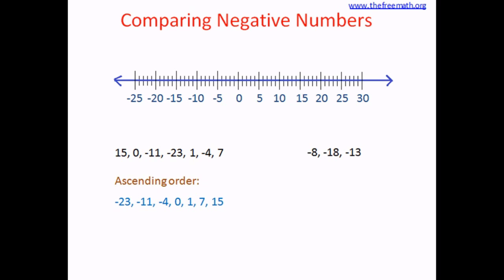The next set is negative 8, negative 18, and negative 13 — all negative numbers — arranged in descending order, meaning the highest number comes first. Going from right to left on the number line, the biggest is negative 8, followed by negative 13, and lastly negative 18. This is how you compare negative numbers.